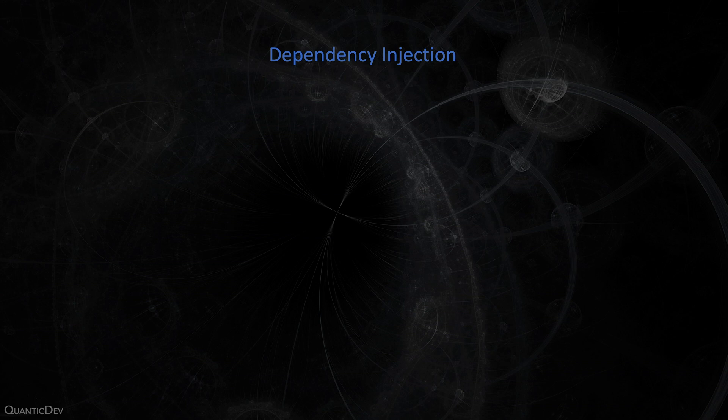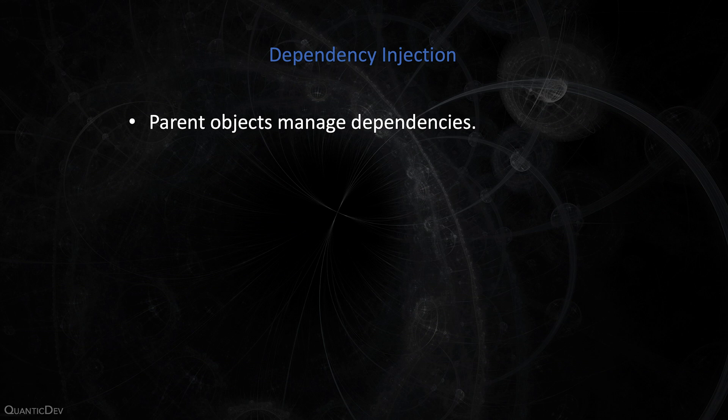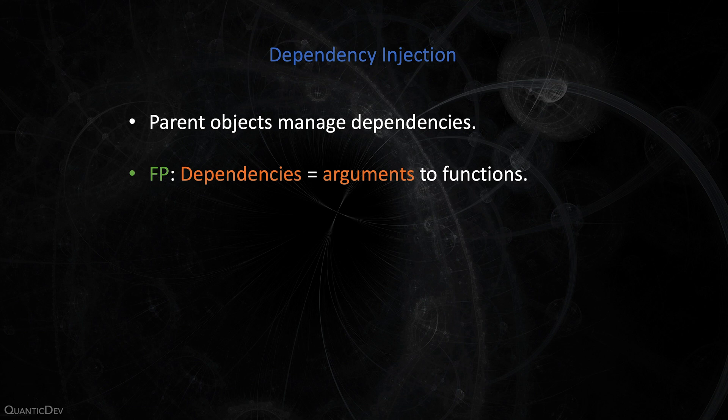8. Dependency Injection. When one object supplies the dependencies of another object, it is doing simple dependency injection, which is also referred to as inversion of control. Basically, instead of all objects managing their own dependencies, they let objects higher in the hierarchy manage the dependencies for them. These dependencies could be classes, services, etc. In functional programming terms, do not instantiate objects randomly in your functions — accept them as arguments to your methods.